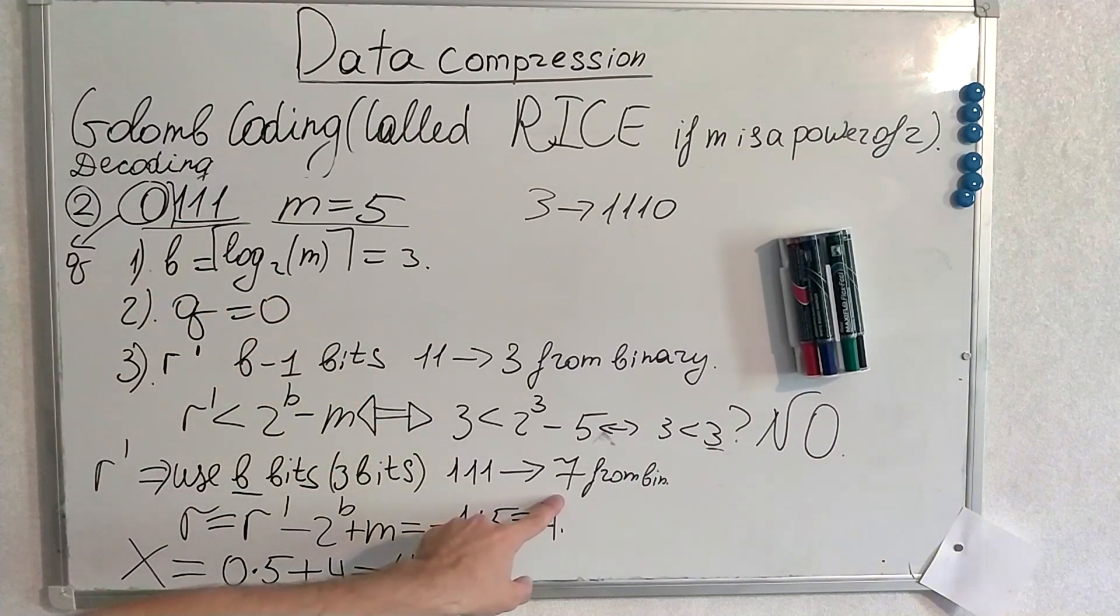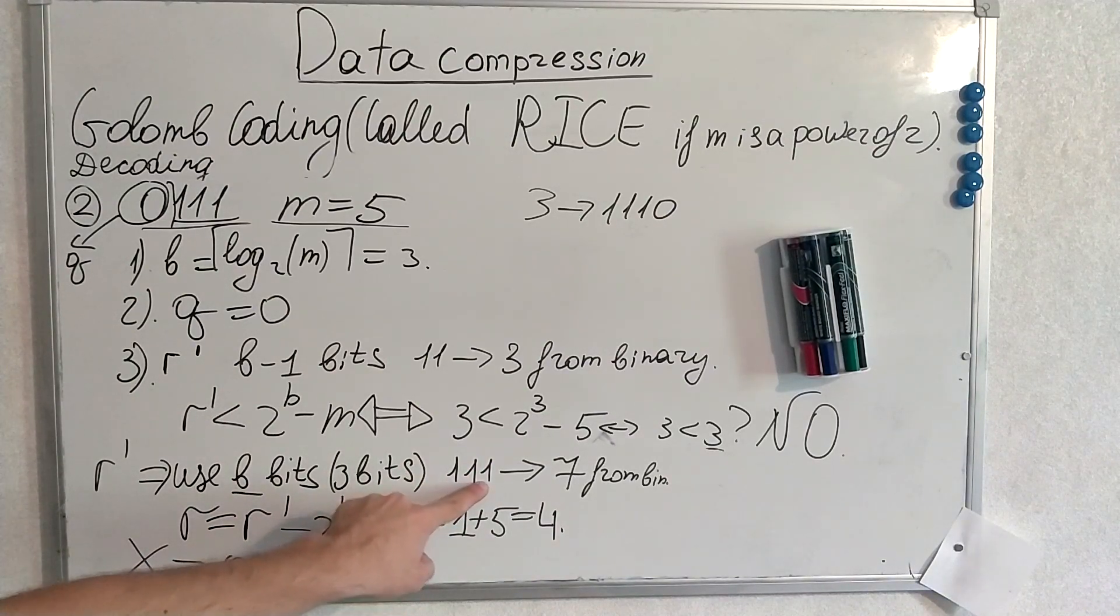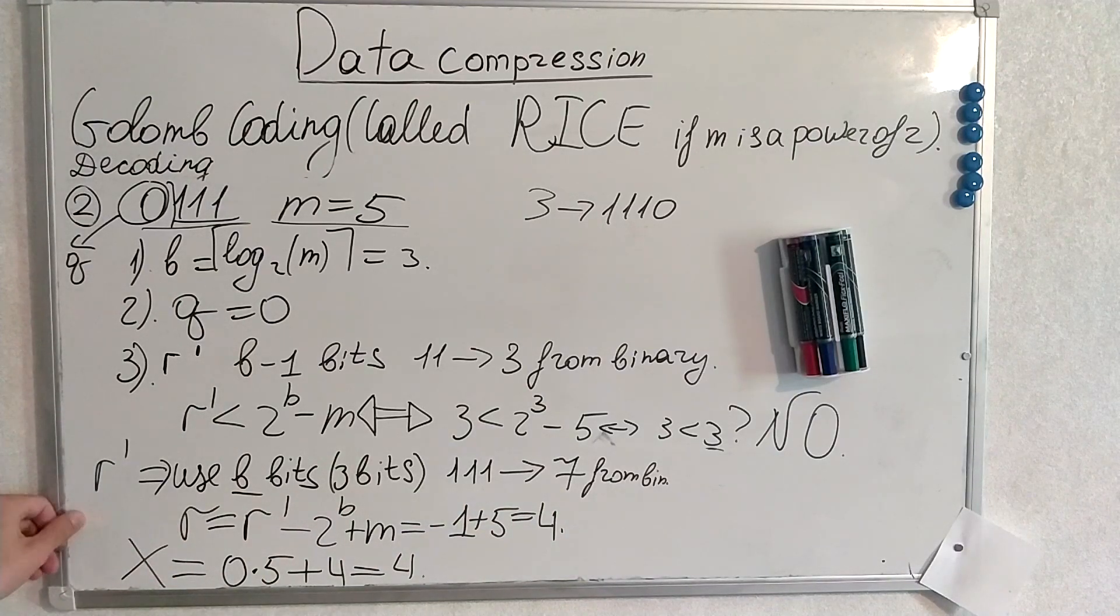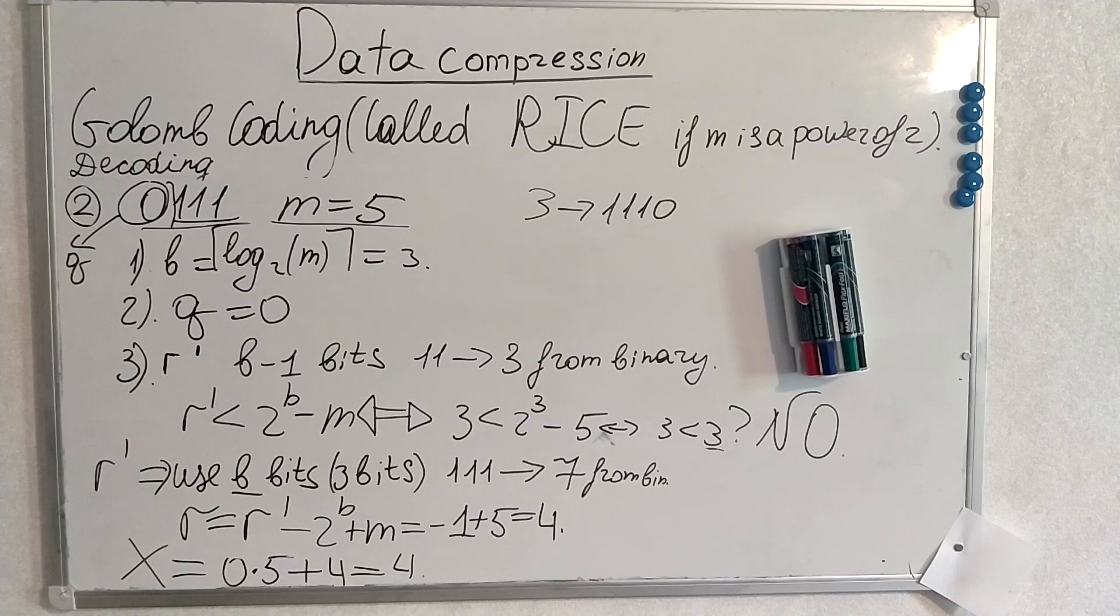And we look at it as if it is binary number. We decode it from binary. This is 7 from binary. And thus r is defined by this formula. r tilde with 7 minus 2 to the power of b, it is 8, plus m 5. Minus 1 plus 5 equals 4. And x is defined by the formula I have already given to you. And this is the calculation. This is our final result. This is the number that has been encoded by this sequence.